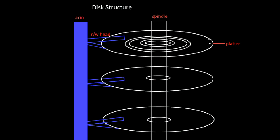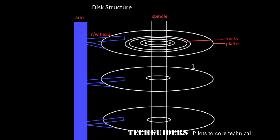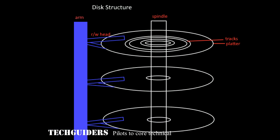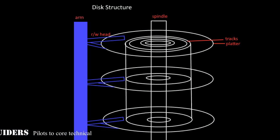Each platter is divided into circular-shaped tracks. Data is first written to the outermost track, which is termed track zero. The tracks at the same distance from the center on all the platters together form a cylinder. In other words, all the tracks which are at the same head position together form a cylinder.